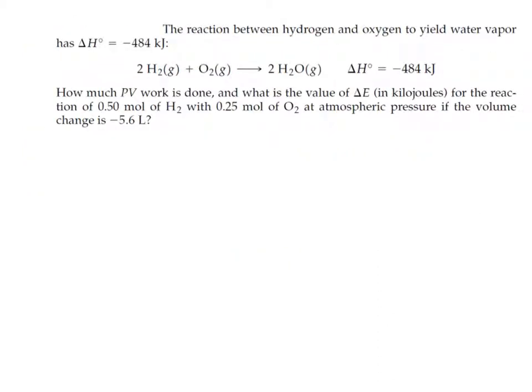When we talk about PV work, we should be thinking about this equation: w equals negative p delta V. The w stands for work, p stands for pressure, and delta V is change in volume.